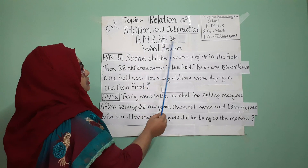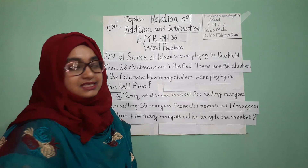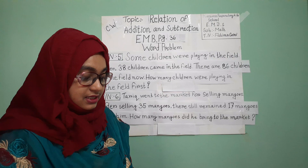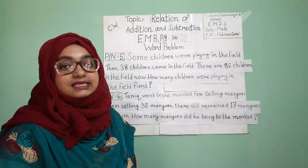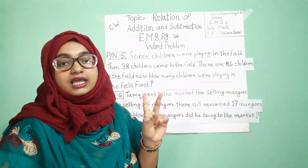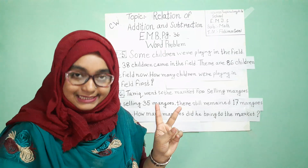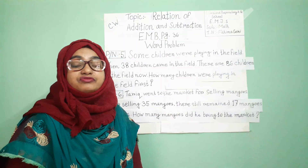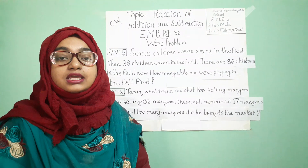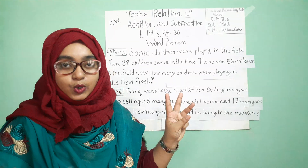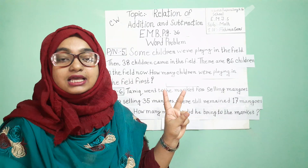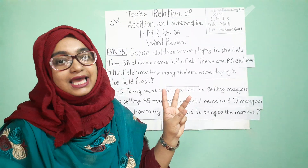From your elementary math book, page number 36, this will be your topic. Today we will discuss and solve two word problems — problem number 5 and problem number 6. You have done word problems previously. There you learned three things are important: one is statement writing, two is calculation, and number three is answer writing.